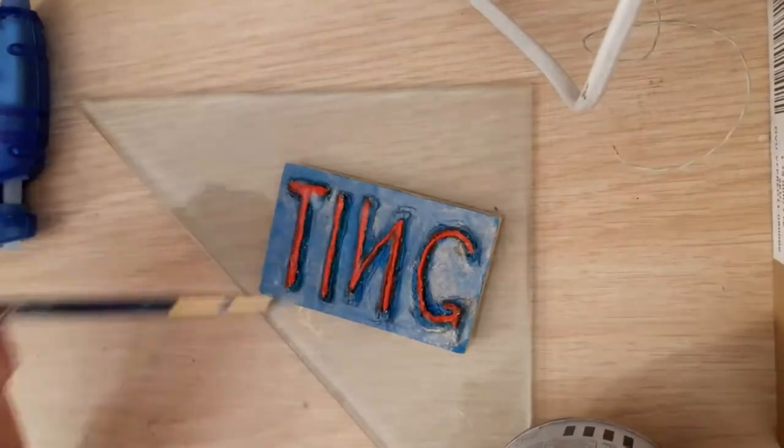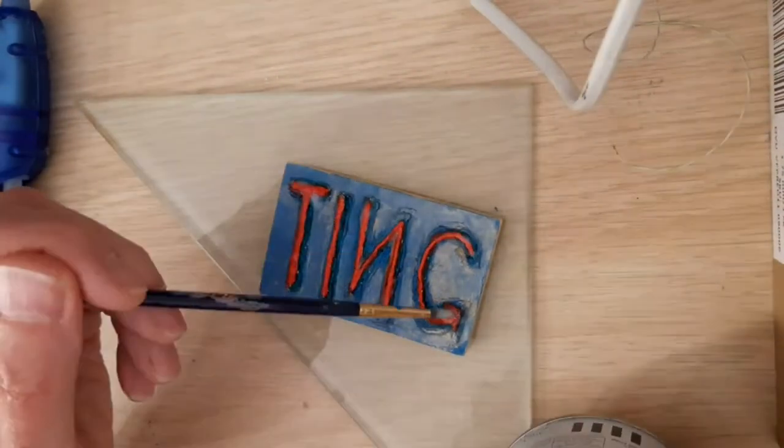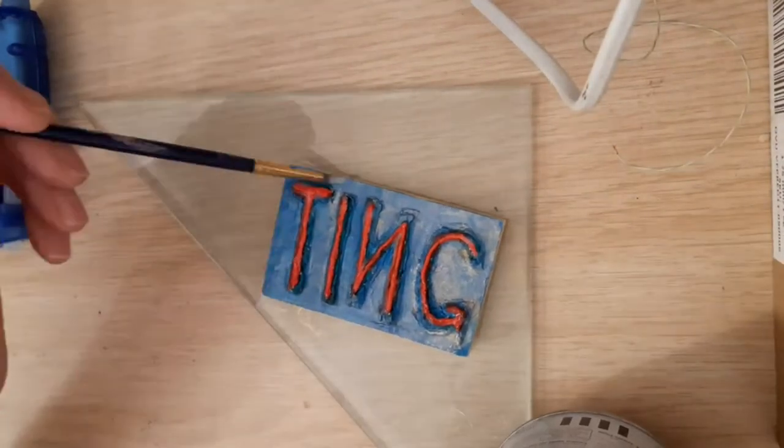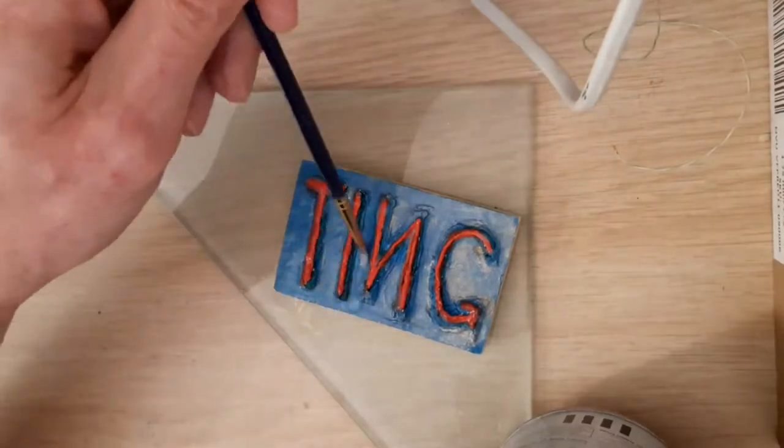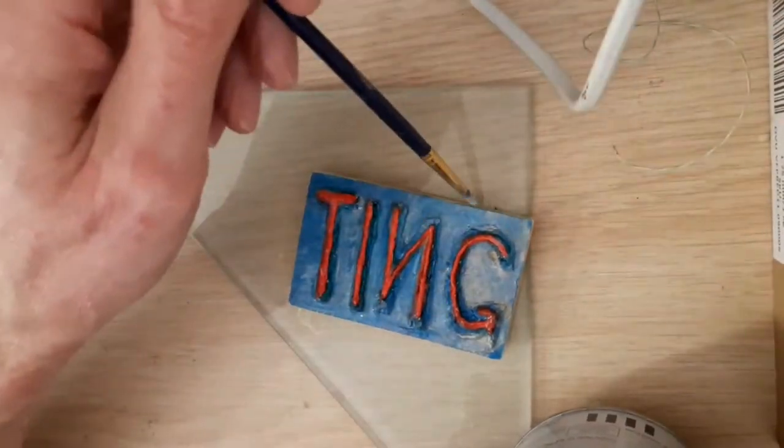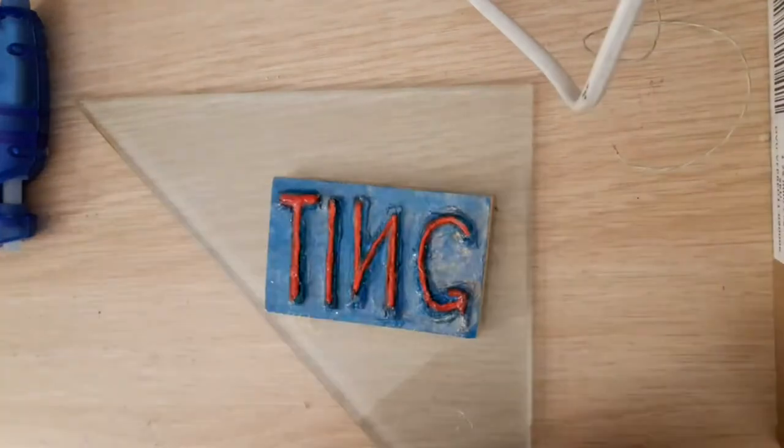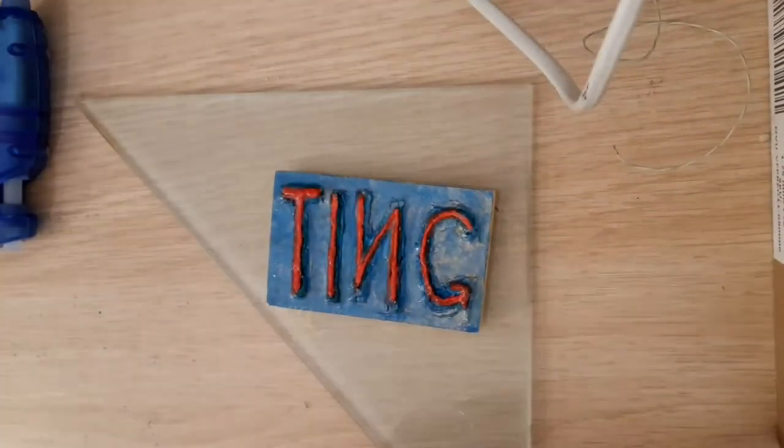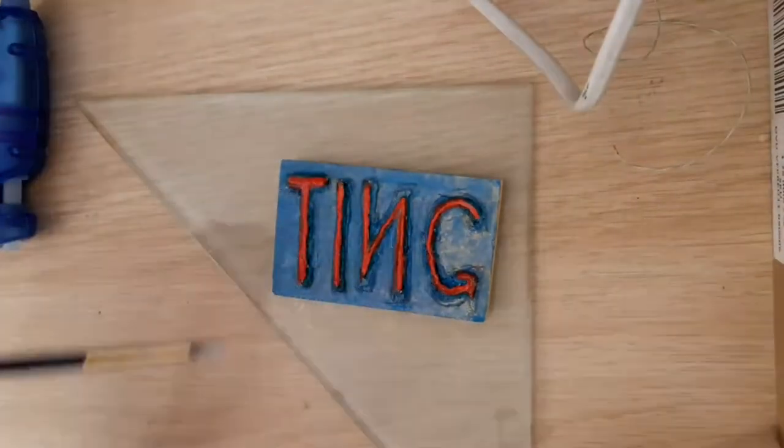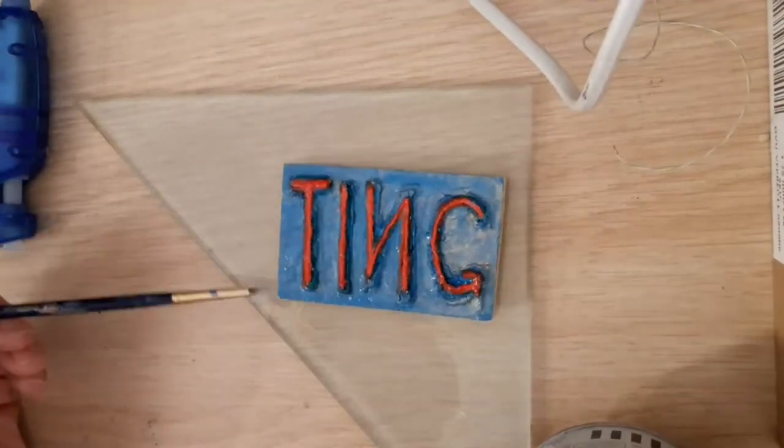Now I'm adding a bit of clear varnish which kind of, not only does it strengthen the plaster, it also gives it a bit more of a luster. I'll just put it all around. Then leave it to dry overnight.